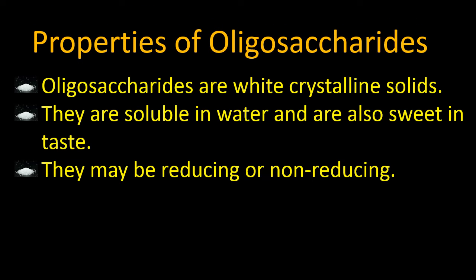Properties of oligosaccharides: they are white crystalline solids, soluble in water, and sweet in taste. They may be reducing or non-reducing. Sucrose is formed by joining two monosaccharides — glucose and fructose — by a glycosidic bond, and that is why oligosaccharides are mostly non-reducing.